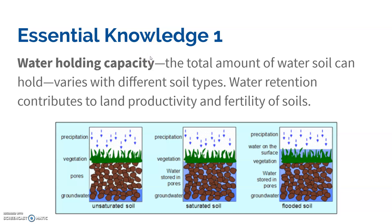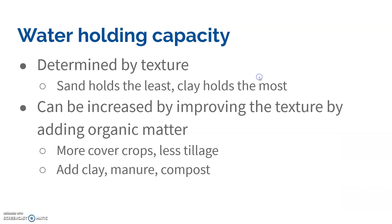Next we're going to talk about water holding capacity, which is the total amount of water that soil can hold. It's different with different types of soil. Clay can hold a lot of water because there are many tiny particles, meaning a lot of surface area, and more surface area means more spaces for water to get into. Water holding capacity leads into water retention — if soil holds a lot of water but doesn't drain at all that's not ideal, but if it drains right through that's also not good because plants need water.